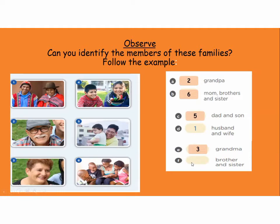Letter F — brother and sister. ¿Dónde está el brother? Number five. Excellent. Number four. Very good. Entonces, this picture is about the families, right? Toda esta imaginación sobre la familia.